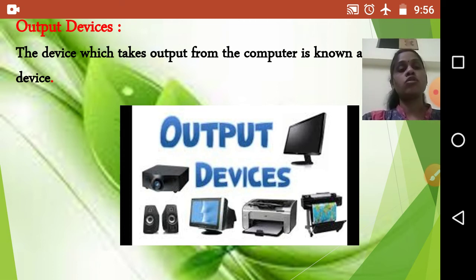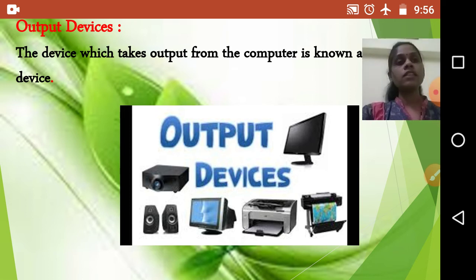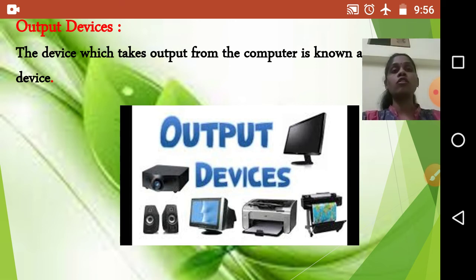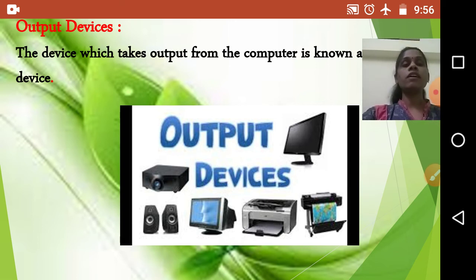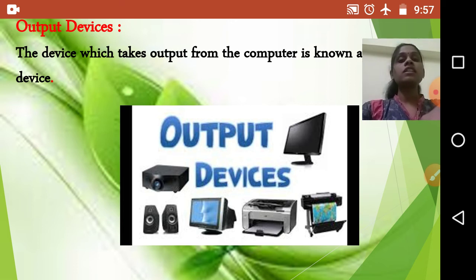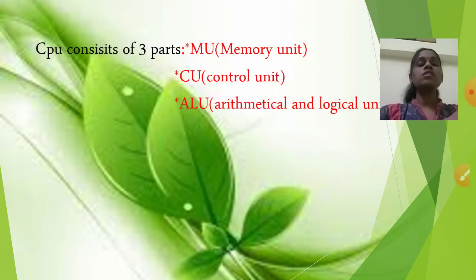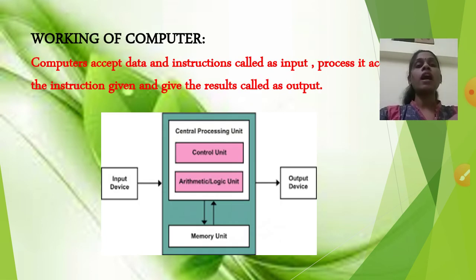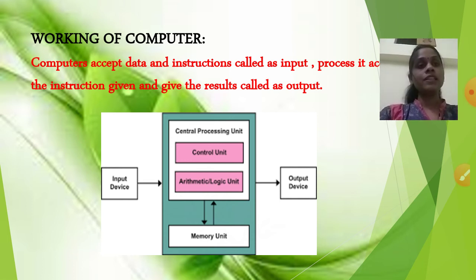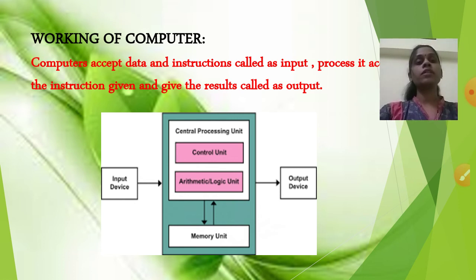Once again, the device which gives output from the computer is known as an output device. Output devices consist of monitor, projector, speaker, printer, and plotter. The CPU consists of three parts: Memory Unit (MU), Control Unit (CU), and Arithmetic and Logical Unit (ALU).